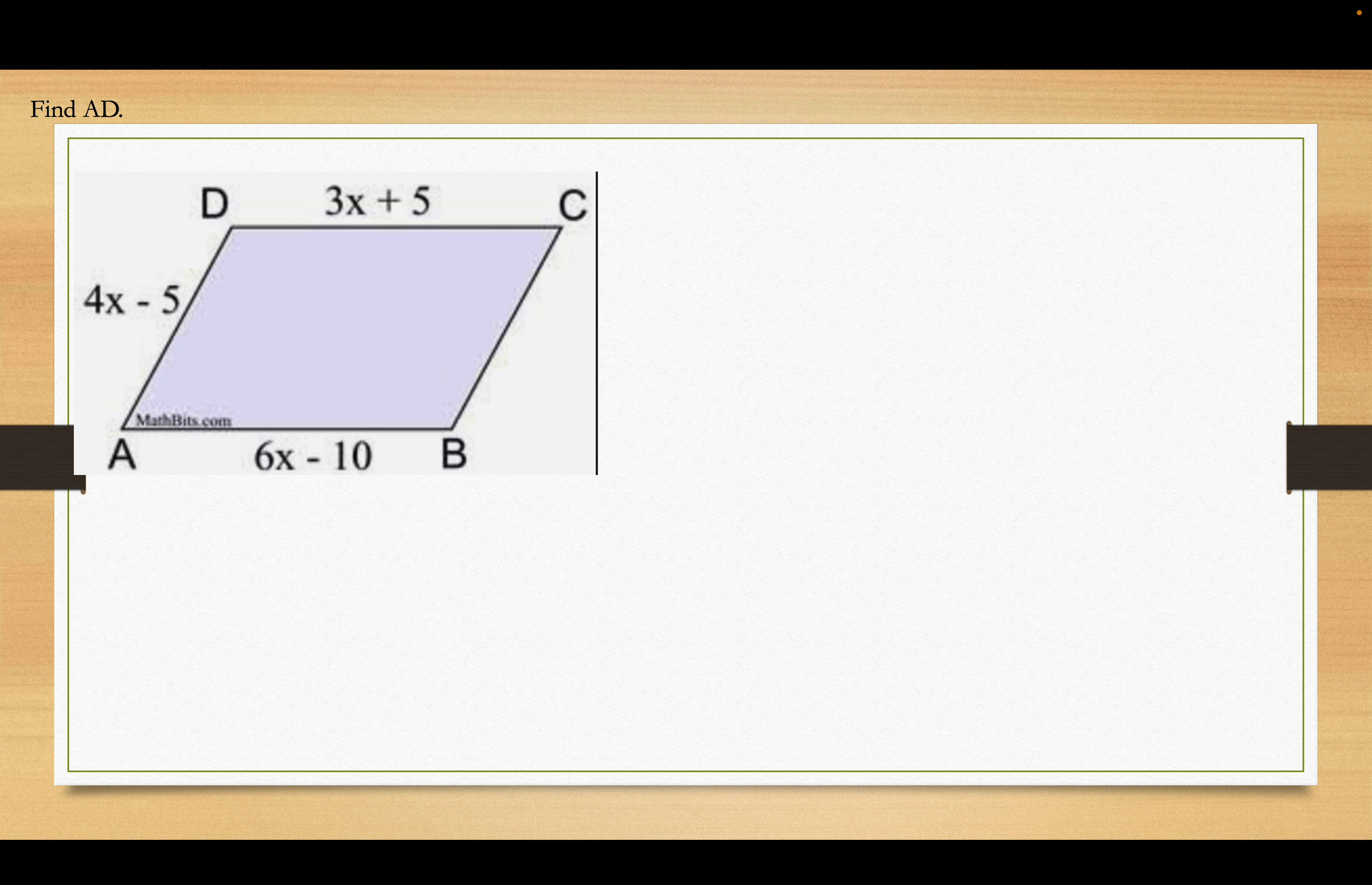Okay, so, opposite sides are equal. So, that means that 3X plus 5 will equal 6X minus 10. Get letters on one side, numbers on the other. 3X is 15. Dividing. And, I get X is 5. To find AD, I plug in the 5. 4 times 5 is 20, minus 5 is 15. Okay? As always, if any of these problems give you difficulties, go back, watch the videotape section over again. So, what we applied there was the principle that the opposite sides of a parallelogram, AB and CD, those opposite sides, they're across from each other. That's what opposite means. They're going to be equal.